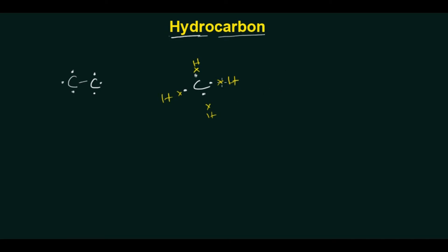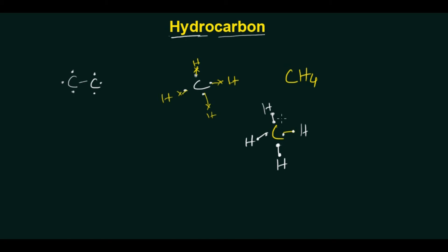Carbon has four valence electrons, so it needs to use one electron per bond — one bond for each. Looking at a basic model: one hydrogen electron bonds with carbon. So the basic group shows one carbon which can hold hydrogen atoms through these bonds.